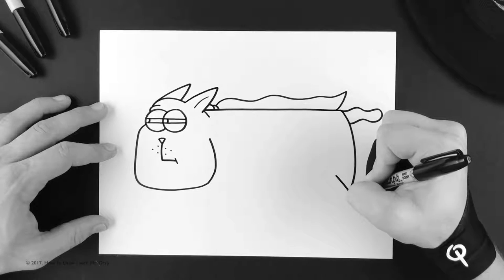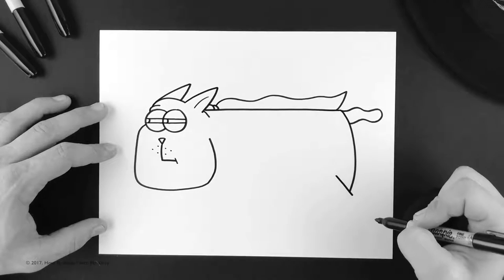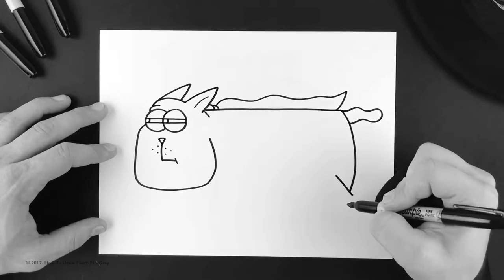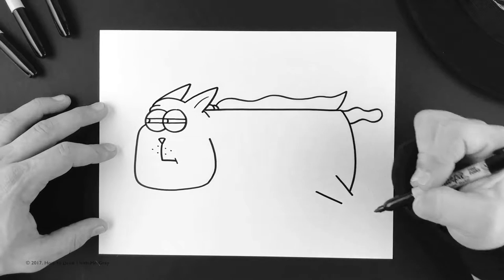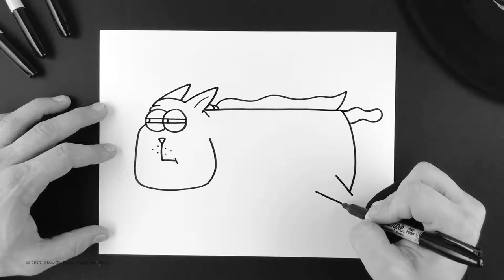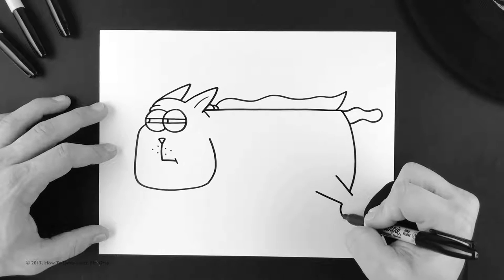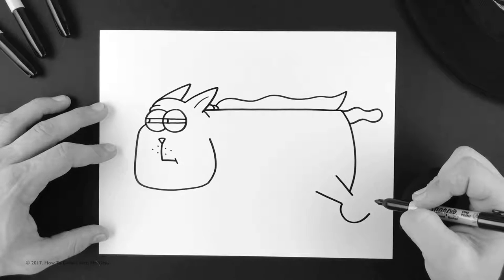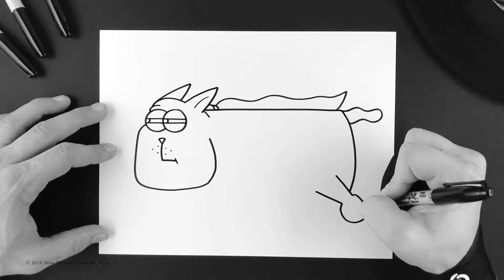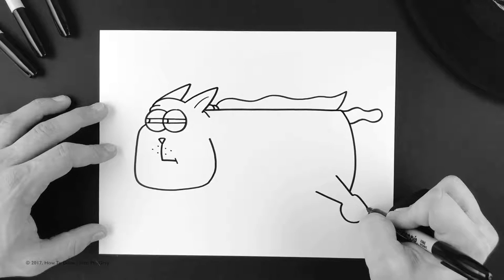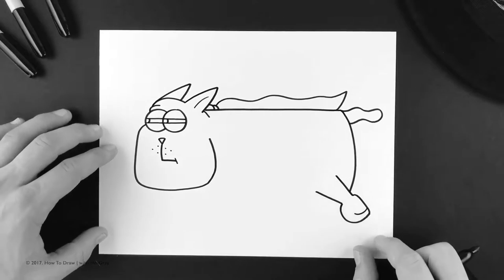his paw. So we'll do one straight line kind of on an angle like that. We're gonna do the same line, but it's gonna be going into it just like that. And then for his paw, we're gonna do pretty much a C—just imagine a C shape. And then put in the little bottom part of his paw, and then do one curved line so we can see his toes.